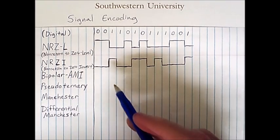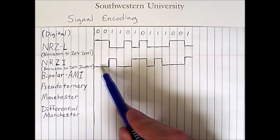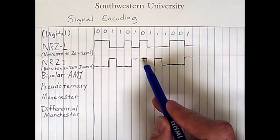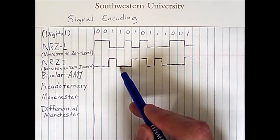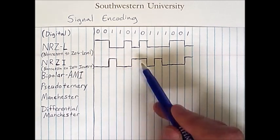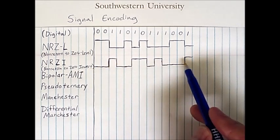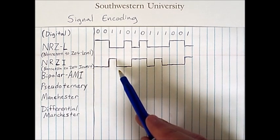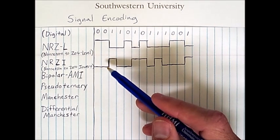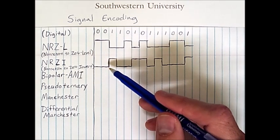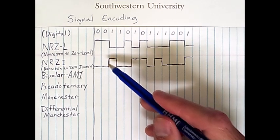To emphasize: we have zeros being encoded both with low voltage levels and with high voltage levels. Similarly, ones can be at a high level or a low level. So it isn't just the current voltage level that indicates what bit was encoded — it's the whole history of the sequence that tells us what the current bit is.